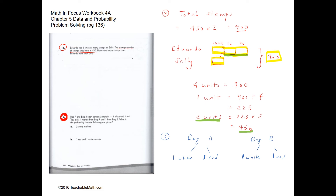Question three is slightly more challenging. We have two bags, bag A and bag B. Each bag has two marbles: one white and one red. The probability of getting a white marble from bag A is one-half, and a red is also one-half. Similarly for bag B. To get two white marbles, we need one white from bag A and one white from bag B: one-half times one-half equals one-fourth.